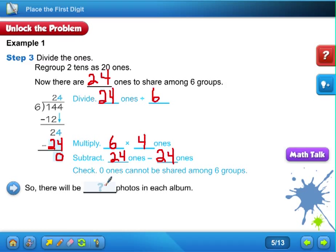So there will be blank photos in each album. There will be right here, that's how many photos you're going to have in each album. You have 144 photos in six albums, and there's going to be 24 photos in each album. You can check that also by multiplying six times 24 and see if you get the answer of 144.